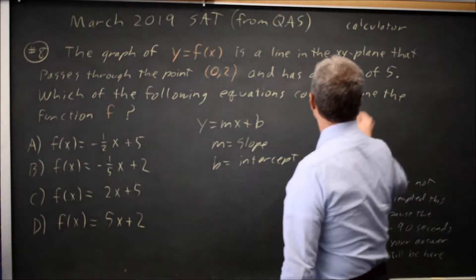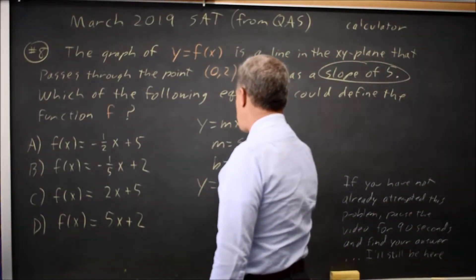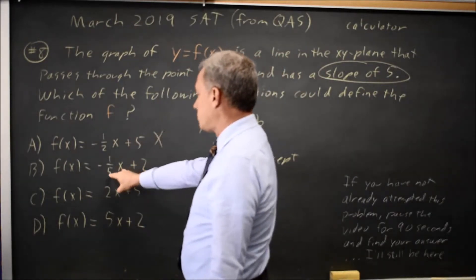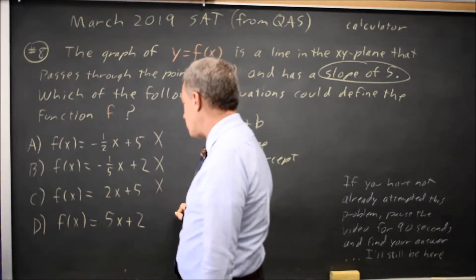And we're told that the slope is 5, so y equals 5x plus b. This has a slope of negative 1 half, so it's wrong. Choice B has a slope of negative 1 fifth, that's wrong. Choice C has a slope of 2, so that's wrong.